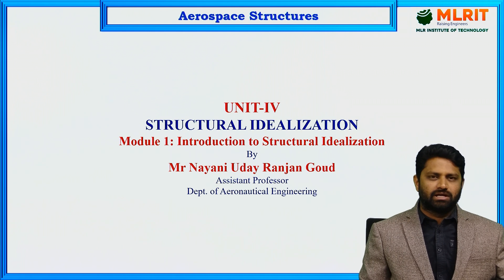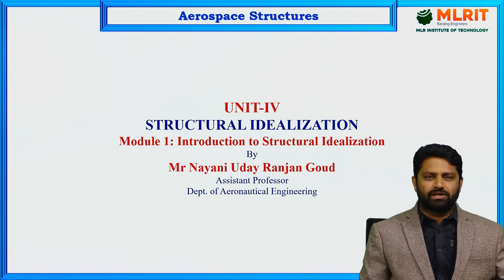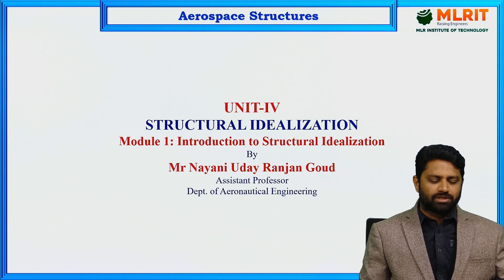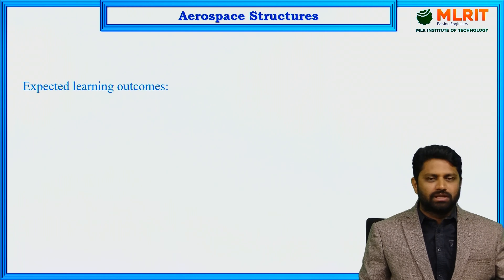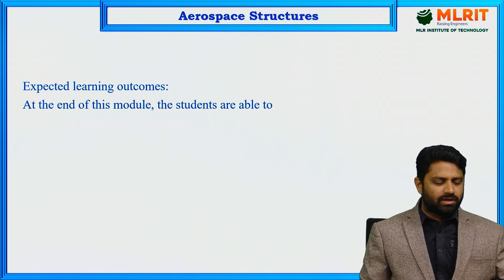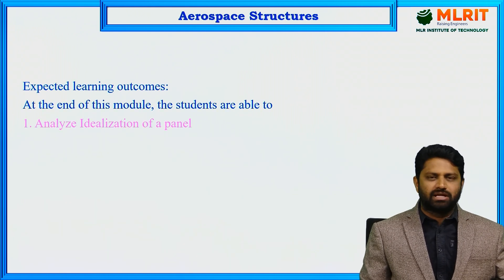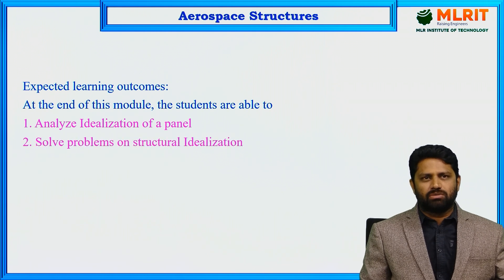In the previous unit we have seen shear and torsion of open and closed section beams. Now we are moving on from shear and torsion of open and closed section beams to structural idealization. The learning outcomes in this module are: students are able to analyze what is idealization of a panel, and students are able to solve problems on structural idealization.